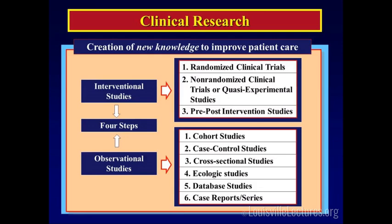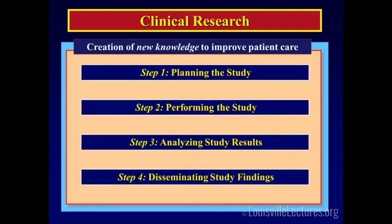If I want to simplify everything that happens in clinical research into four steps — it doesn't matter if it's a clinical trial or a cohort study — it's four steps: we always start with planning the study, then move to performing the study, then analyzing the data, and then disseminating the results. The definition of clinical research is the creation and dissemination of new knowledge using subjects. We need to create new knowledge — the first three steps — and disseminate it — the last step.